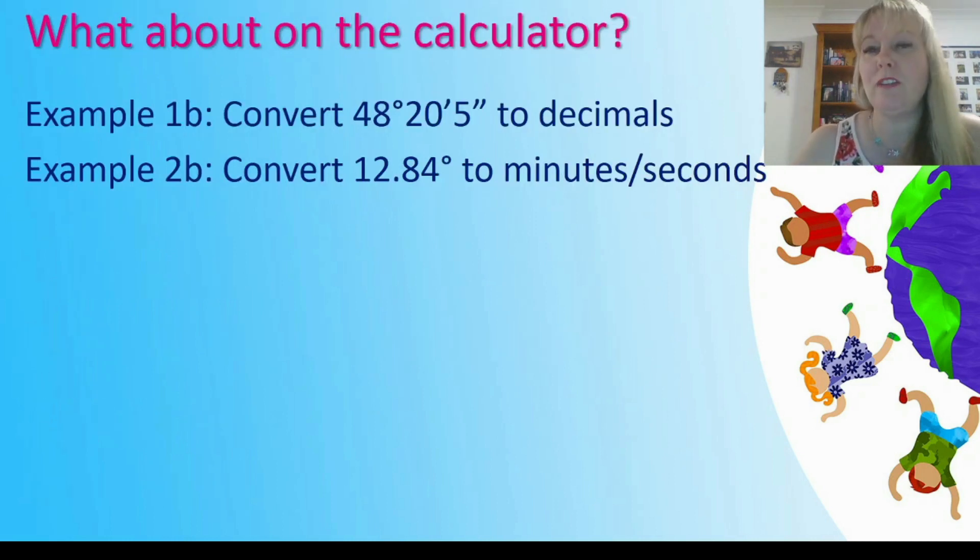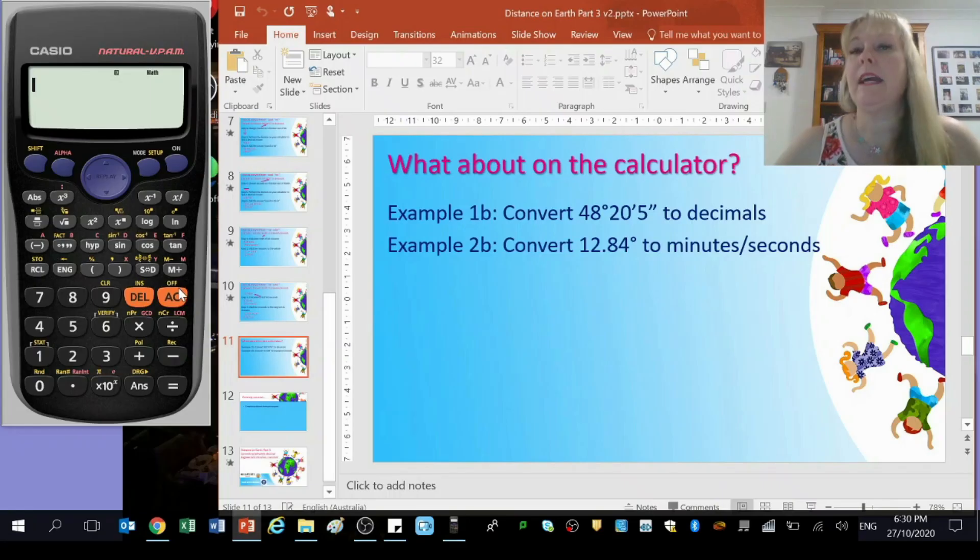All right let's talk about how to do that on the calculator. Something important to be aware of when you're using a calculator is that you need to be in degrees mode. Earlier I talked about presenting angles in radians. If we're doing it in degrees you need to have a little D on your screen. If your screen has a little R that means you're in radians mode.